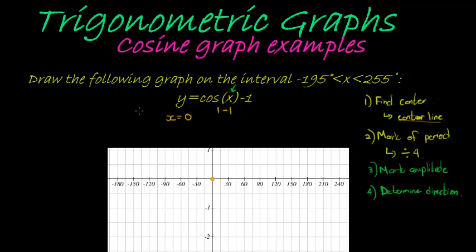Now, for our center line, we are going to draw a center line, and our center line is given by that value that's added or subtracted outside of our cosine function at negative 1. So there we go. So that is our center line right there, y is equal to negative 1.